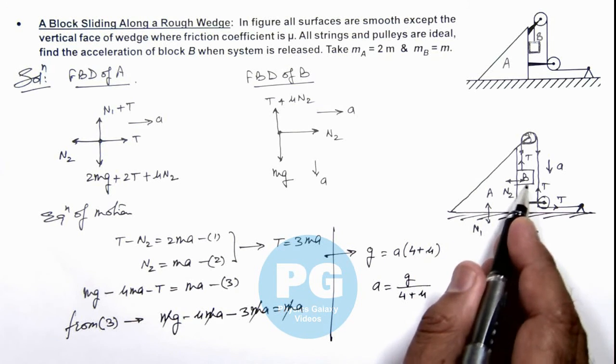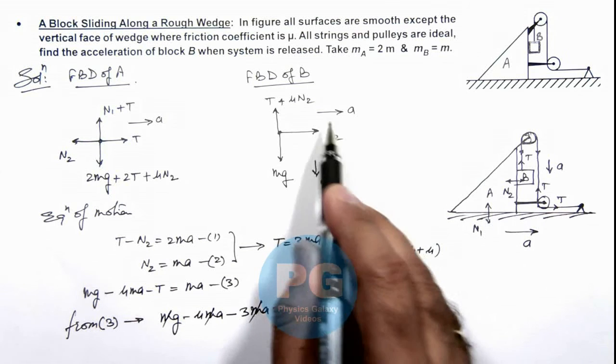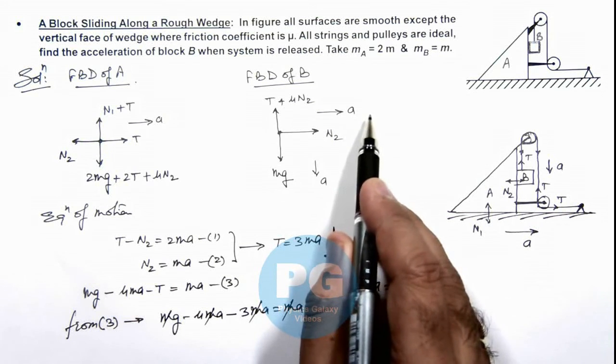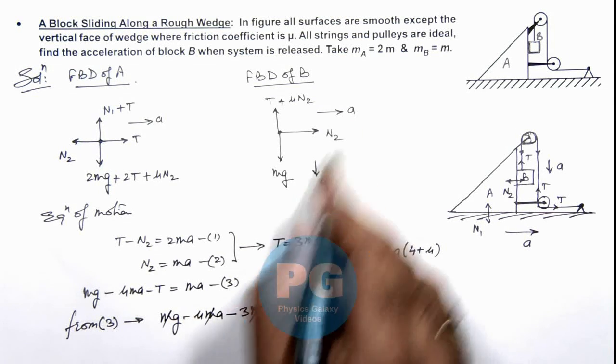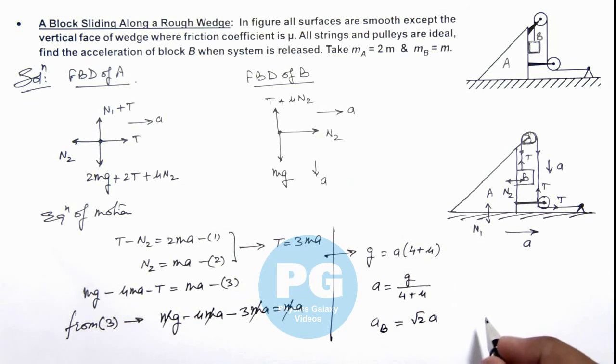And as block B is going down with acceleration a as well as it is moving toward right with acceleration a, we can write acceleration of block B is √2 times the acceleration of A, the resultant of these two equal accelerations at right angle. So this is √2g/(4 + μ), that will be the final result of this problem.